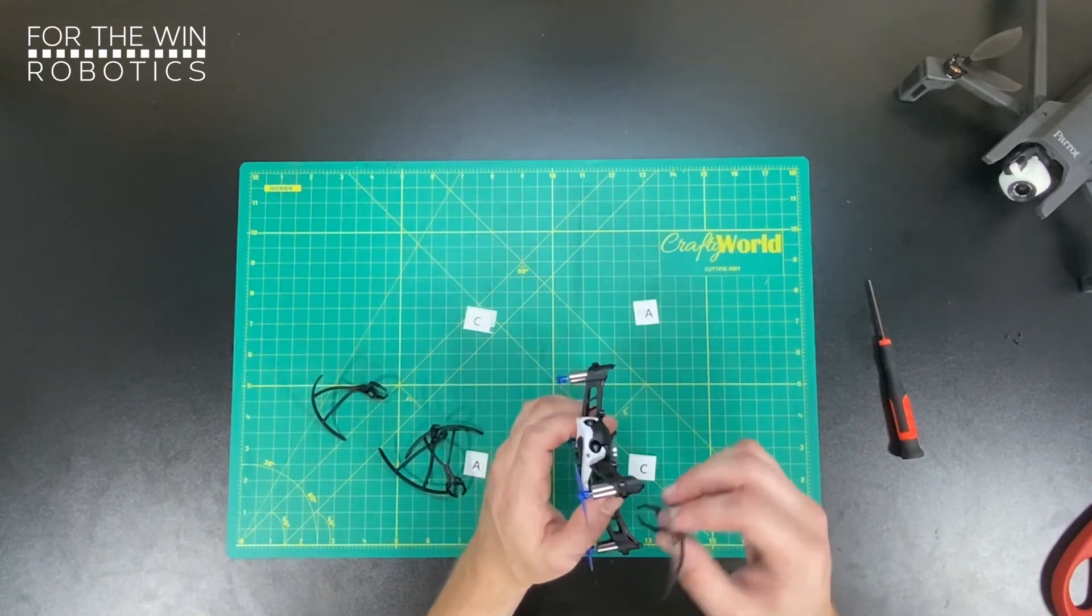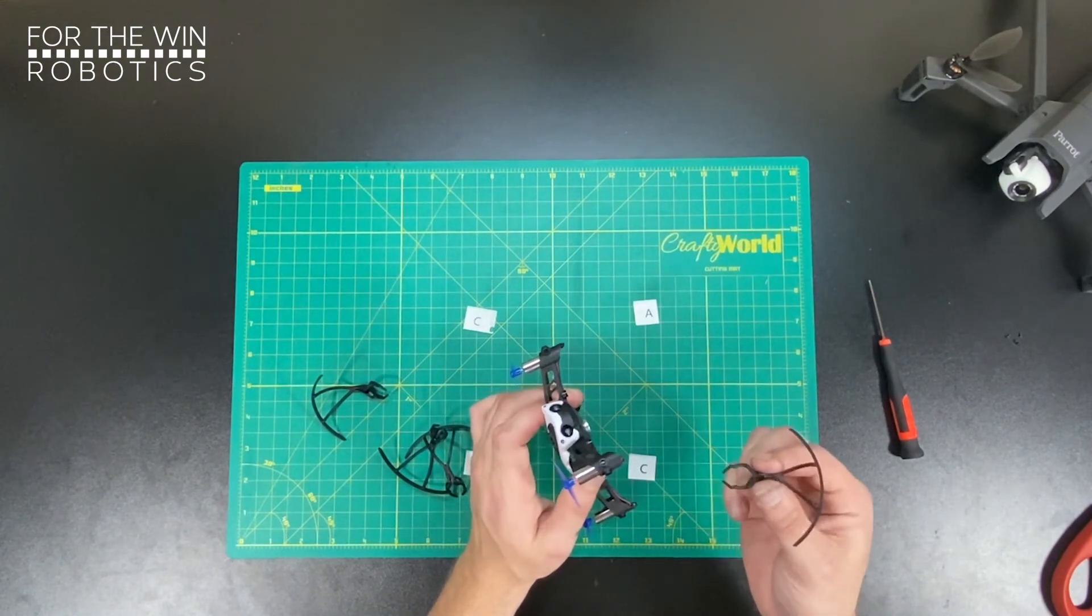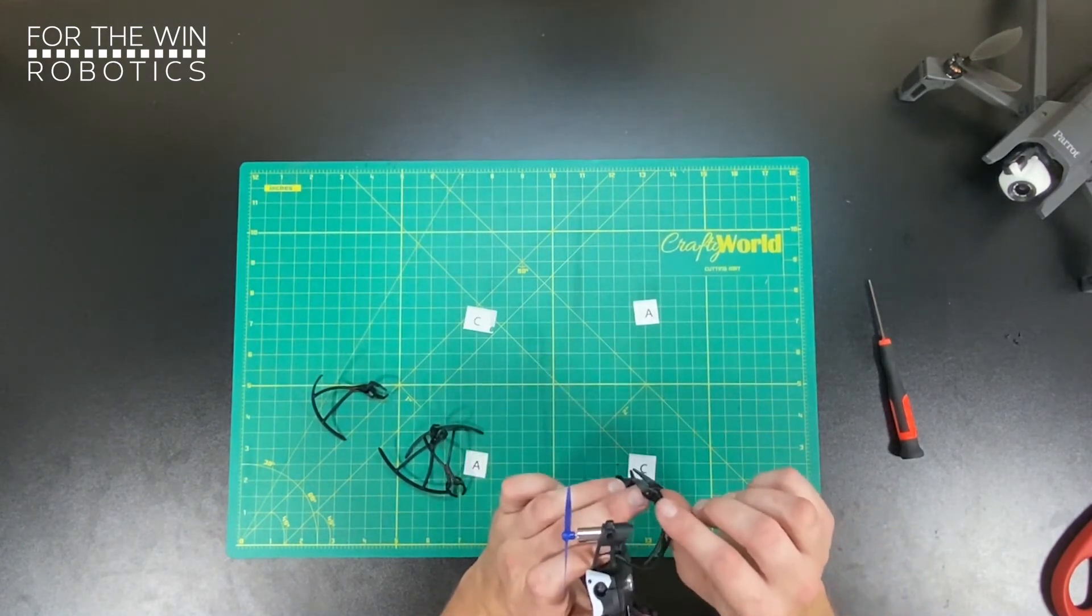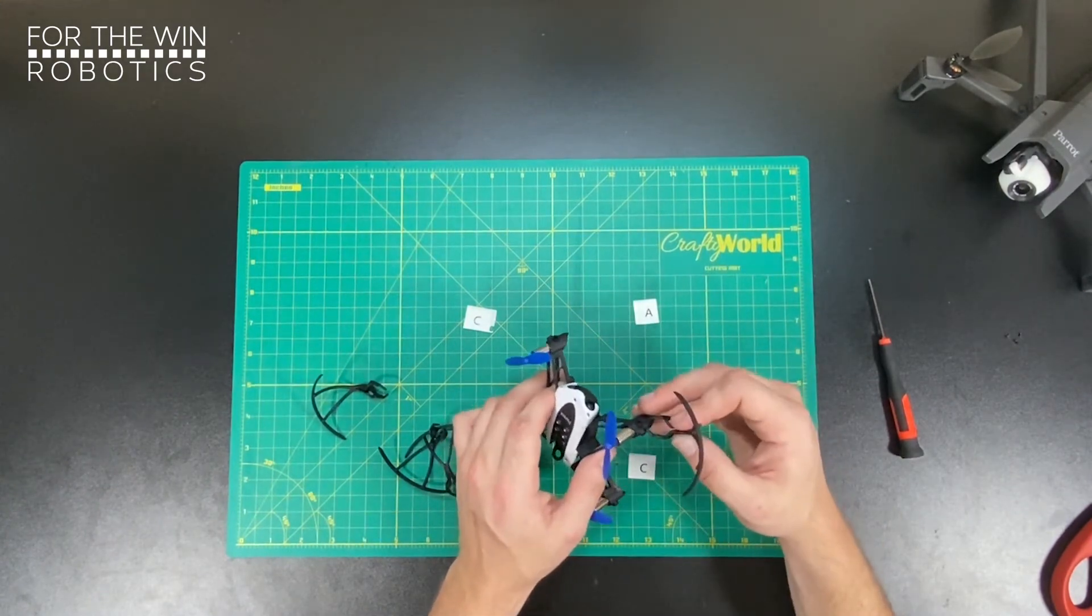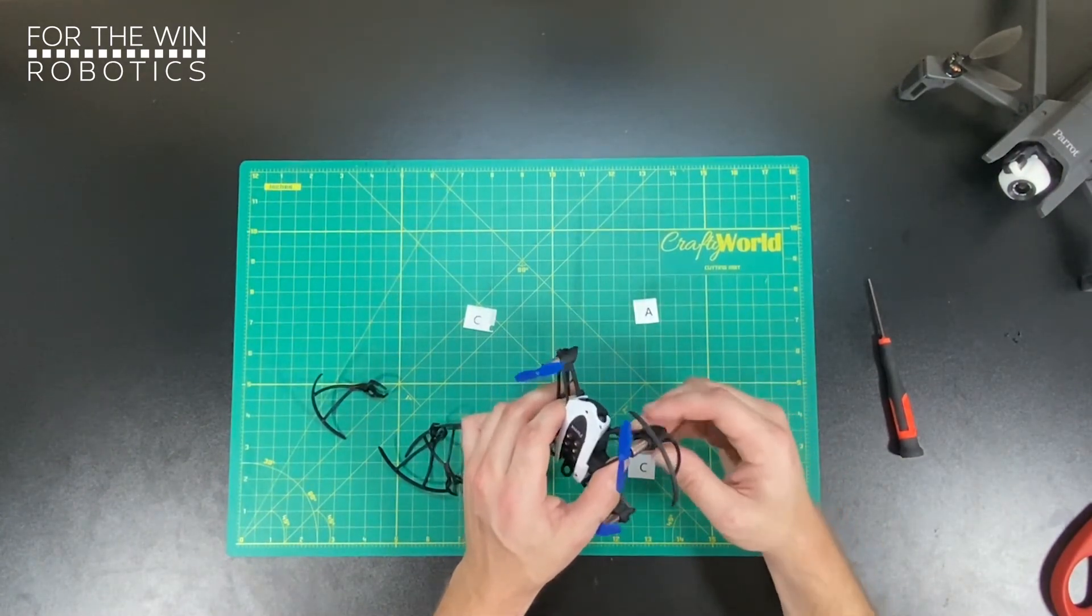So these attach to these protrusions on the drone and the holes themselves have a hole. And so they just snap on.